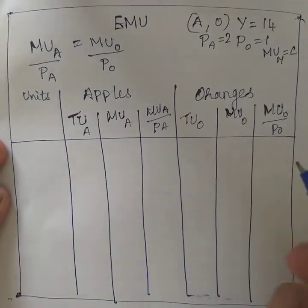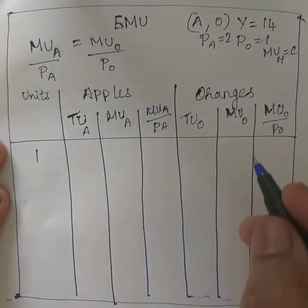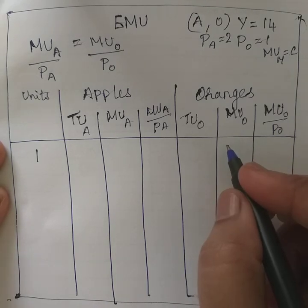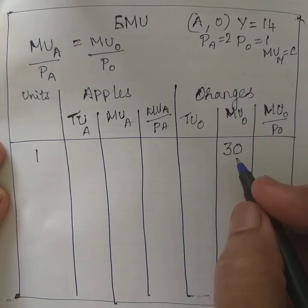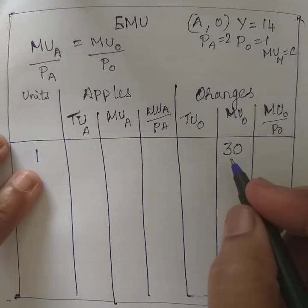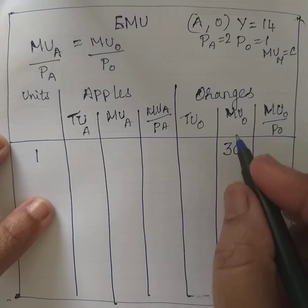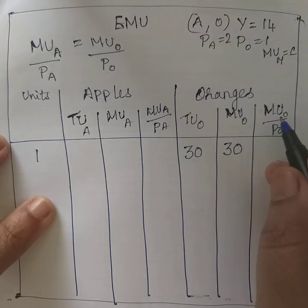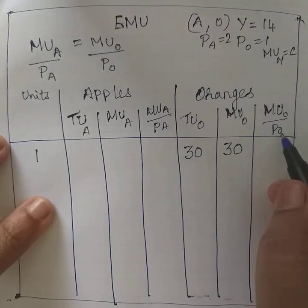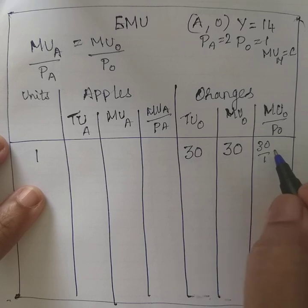With income of 14, the first unit of orange purchased provides 30 utils. Utils is the unit of measurement of utility. Since this is the first unit consumed, the marginal utility of orange equals the total utility, which is also 30. Since the price of orange is 1, MU/P = 30 ÷ 1 = 30.